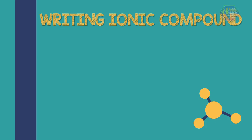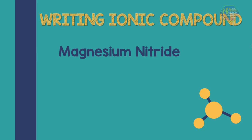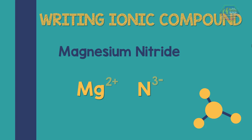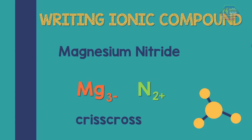To write the formula for magnesium nitride, the superscript represents the ionic charge of each element. When they combine to form a compound, the ionic charge of the anion becomes the subscript of the cation, and the ionic charge of the cation becomes the subscript of the anion. This method is known as crisscross — as the name suggests, the ionic charges crisscross with each other.